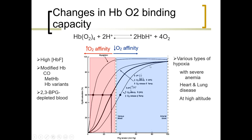A decrease in oxygen affinity shifts the curve to the right. In the lungs, hemoglobin grabs and holds onto oxygen, but at the tissues it must let go. At the tissues, a decrease in pH occurs because cells undergo metabolic processes, producing CO2 as waste and creating an acidic environment. This decrease in pH decreases hemoglobin's affinity for oxygen. Other factors causing decreased affinity include an increase in DPG, increased oxygen release, and increased temperature — tissues are warmer than the lungs. Decreased oxygen affinity is also seen with various types of hypoxia, severe anemia, heart and lung disease, or at high altitudes.